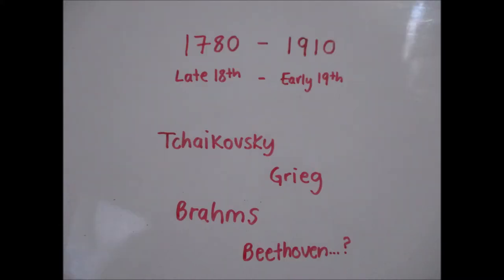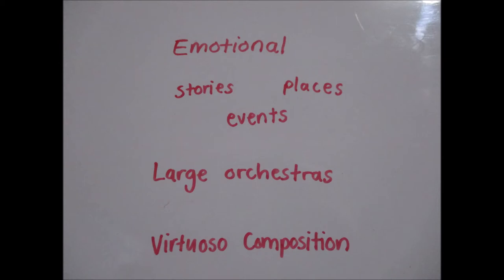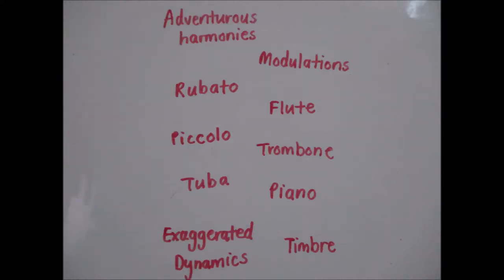Romantic. The Romantic period lasted from around 1780 to 1910, that's the late 18th to early 19th century. Romantic composers include Tchaikovsky, Grieg, Brahms and some of Beethoven's works. Quite emotional, Romantic songs are usually about stories, events and places and played by large orchestras. This was the beginning of virtuoso composition. Romantic music is all about adventurous harmonies and modulations. They introduced the concept of rubato and also added instruments like flute, piccolo, trombone, tuba and piano to the orchestra. Listen for exaggerated dynamics and timbre.